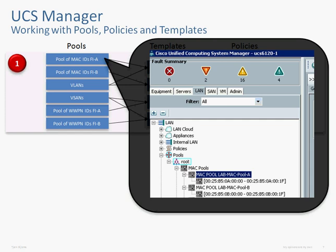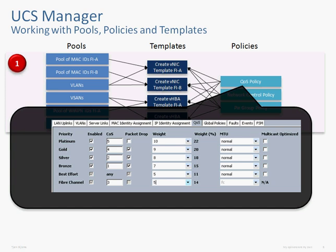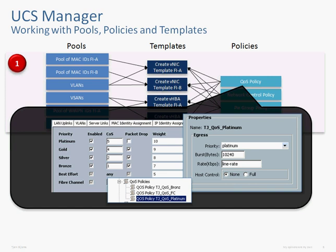This is similar for the worldwide port names, the worldwide node names, or the UUIDs. In this case, the pool has a name and then a range of MAC addresses — and for worldwide port names, it will be a name and a range of worldwide port names. The QoS policy is similar in the sense that I configure QoS at a global level to tell UCS which QoS settings are enabled for the entire system. After that, I can start to define policies, and it only makes sense to create policies that are actually enabled in the system itself.